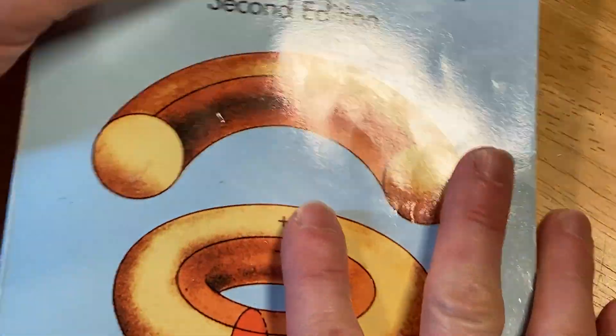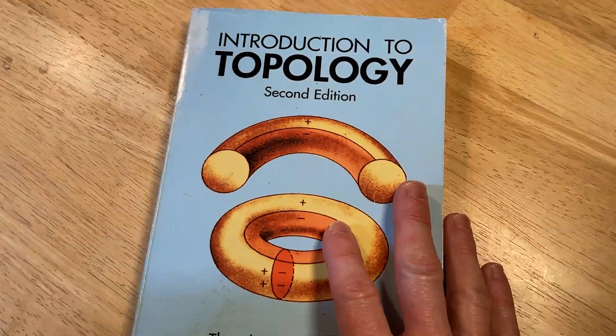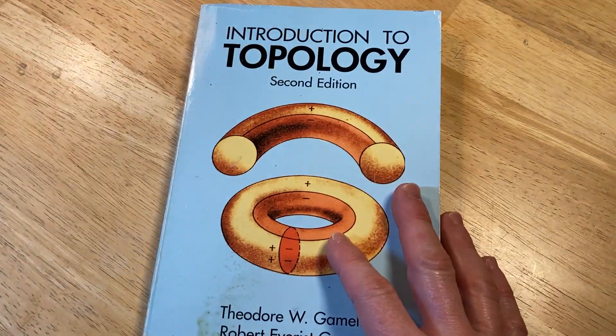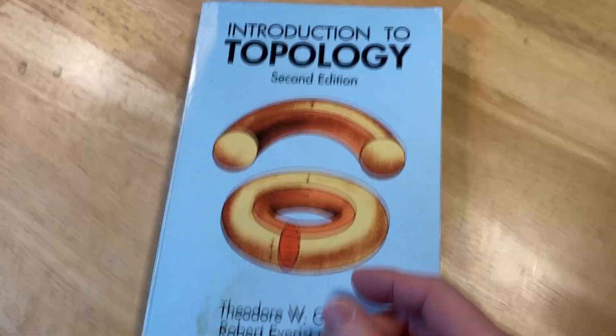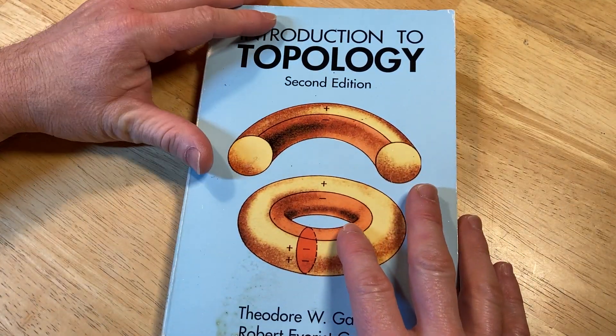Anyways, one of my favorite topology books, maybe my favorite. I mean, Munkres is a great book. It's the de facto standard. Everyone loves it. I mean, I have it right here. Munkres, it's a wonderful book. But this one has answers, and that makes it amazing.